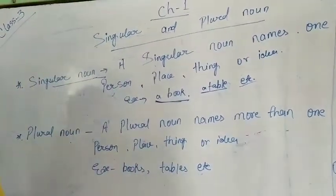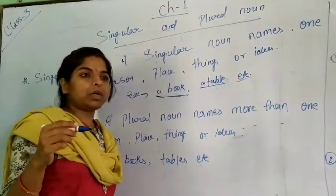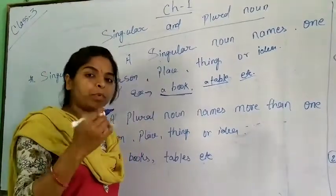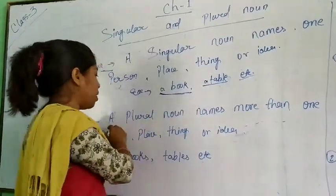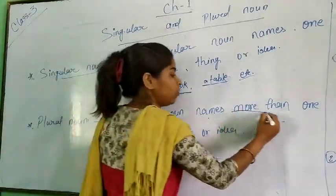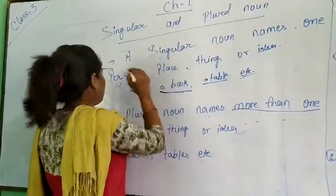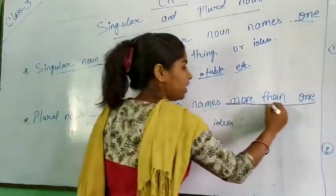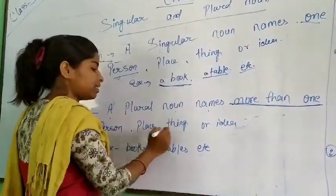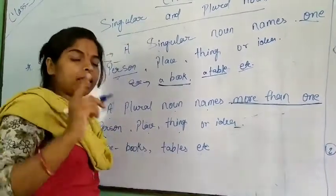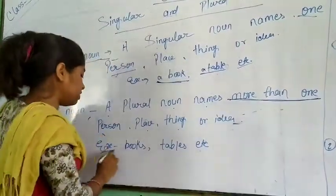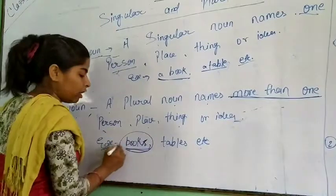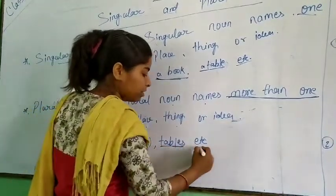Next, plural noun. Plural noun is which counts as more than one. Jiski sankhya ek se zyada ho, use hi plural noun kaha jata hai. A plural noun means more than one. Singular noun refers to only one person, and plural noun is more than one person, place, things or ideas. For example, 'books' — that means ek se zyada book, more than one book. 'Tables' — ek se zyada tables, etc.